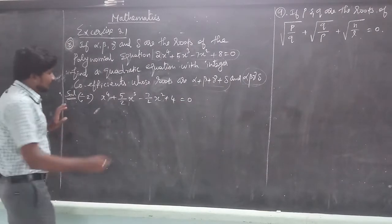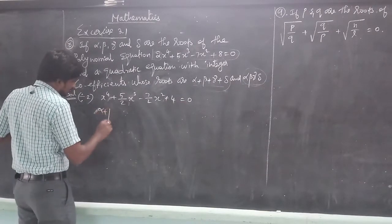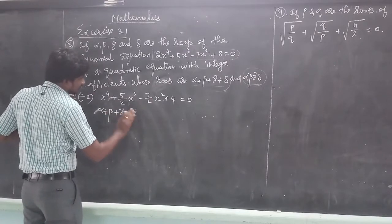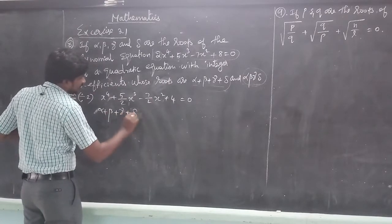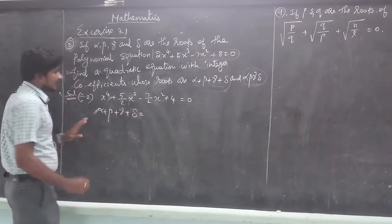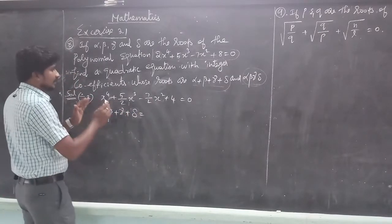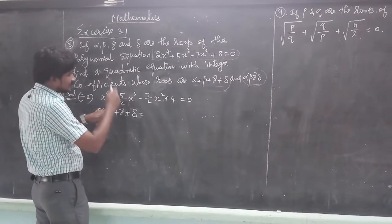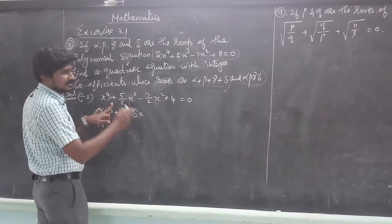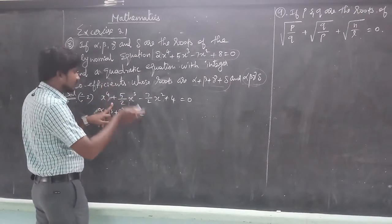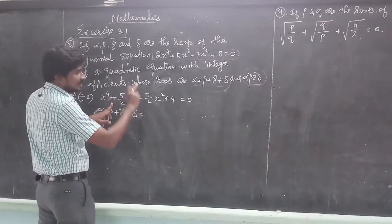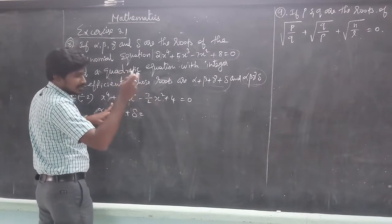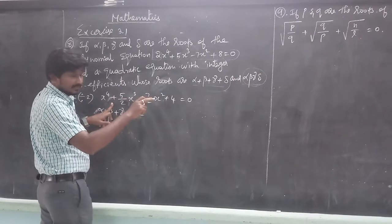So now, alpha plus beta plus gamma plus delta — that's the sum of the roots. The general formula is x⁴ minus (alpha + beta + gamma + delta)x³ plus (alpha·beta + beta·gamma + gamma·delta + alpha·delta + ...) and so on.